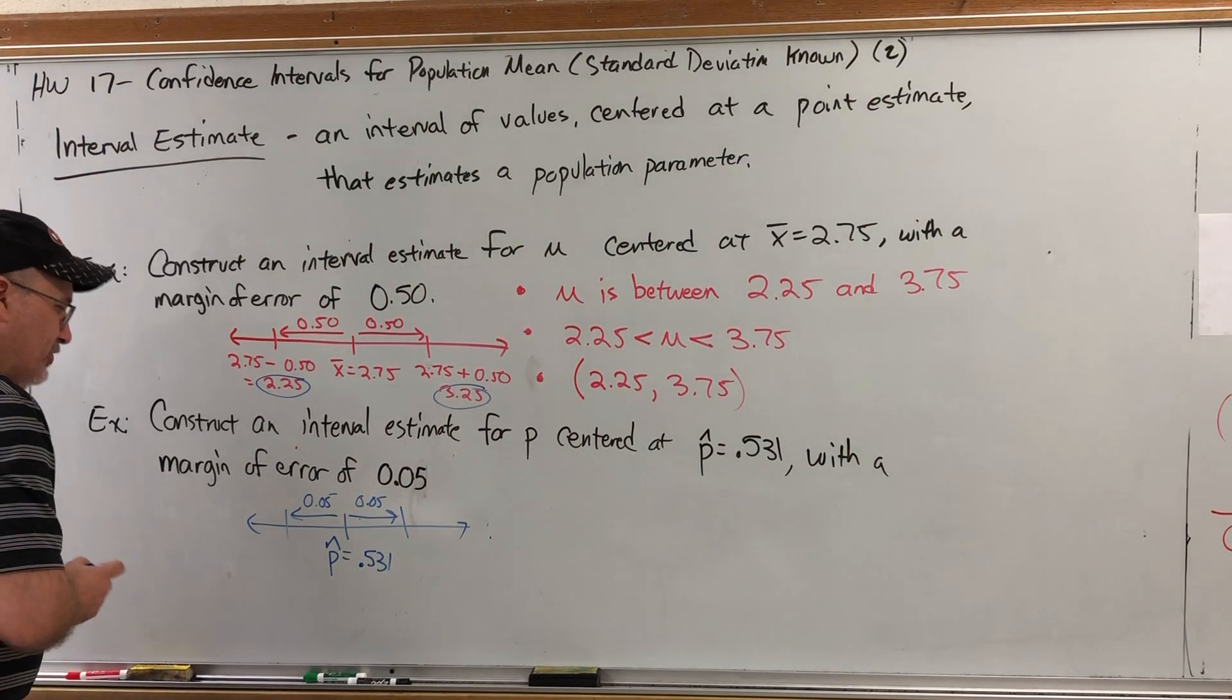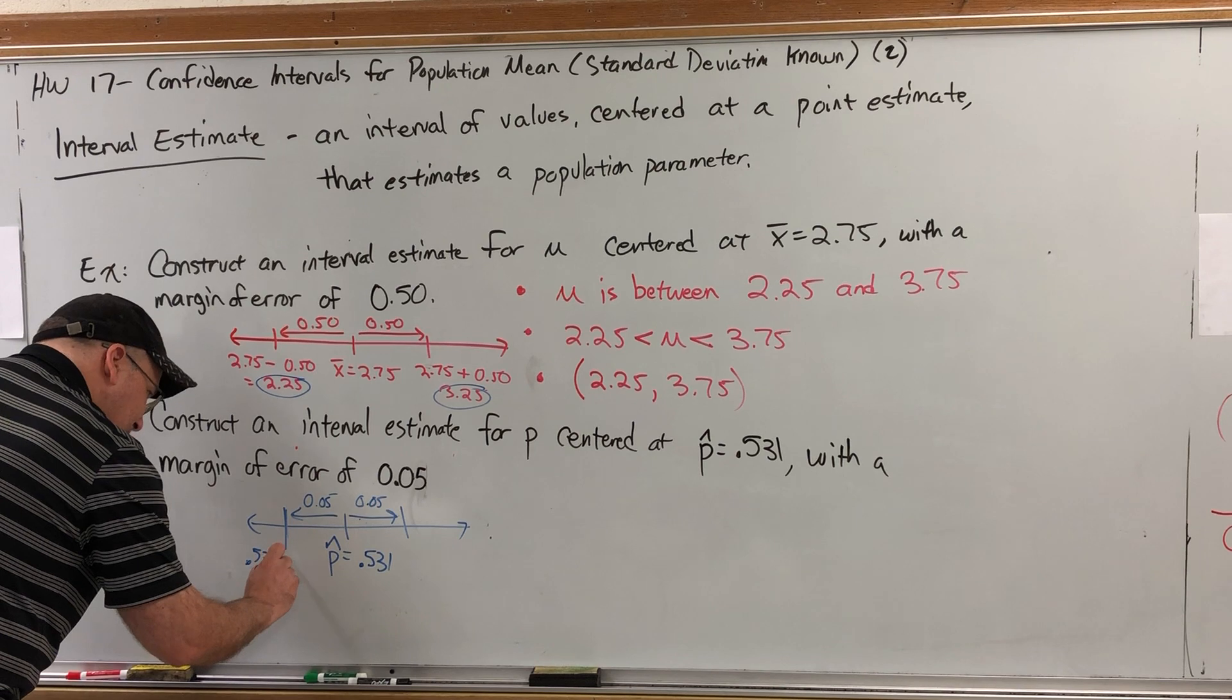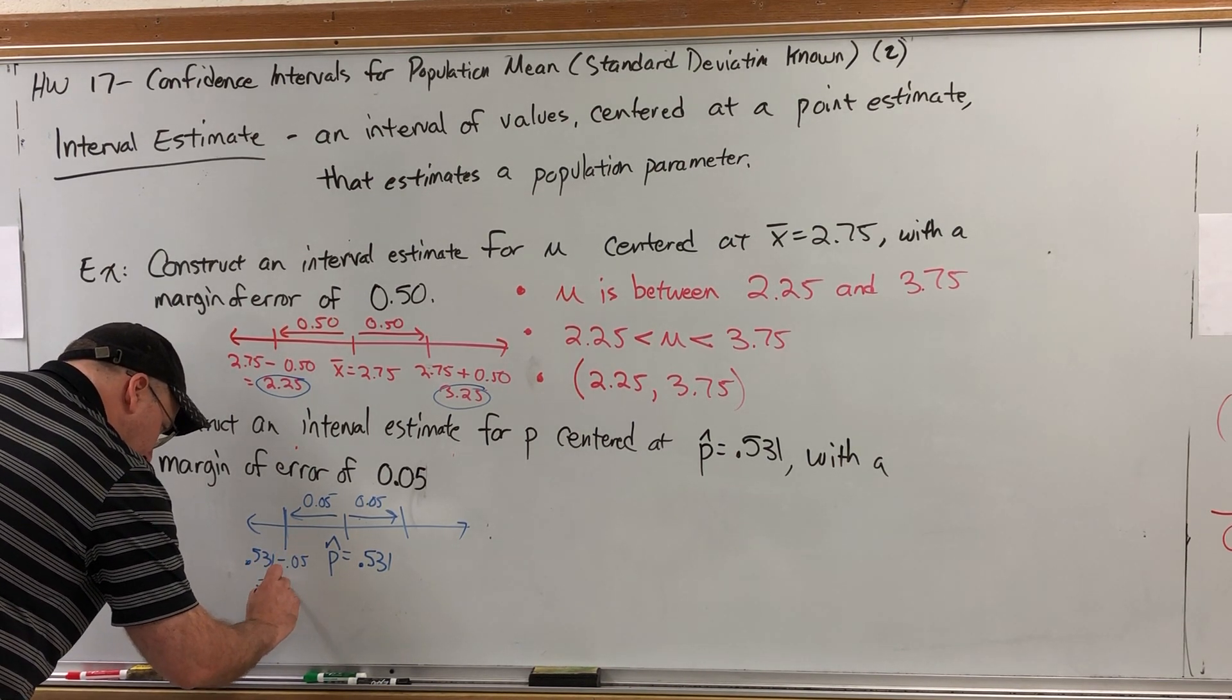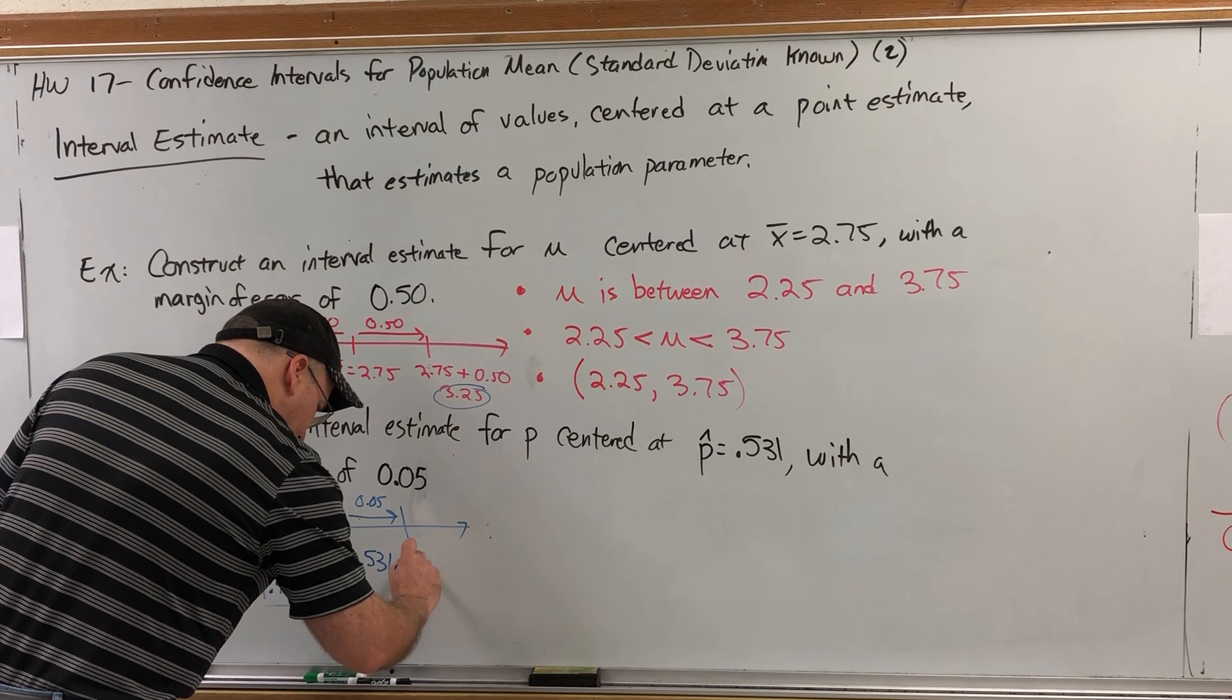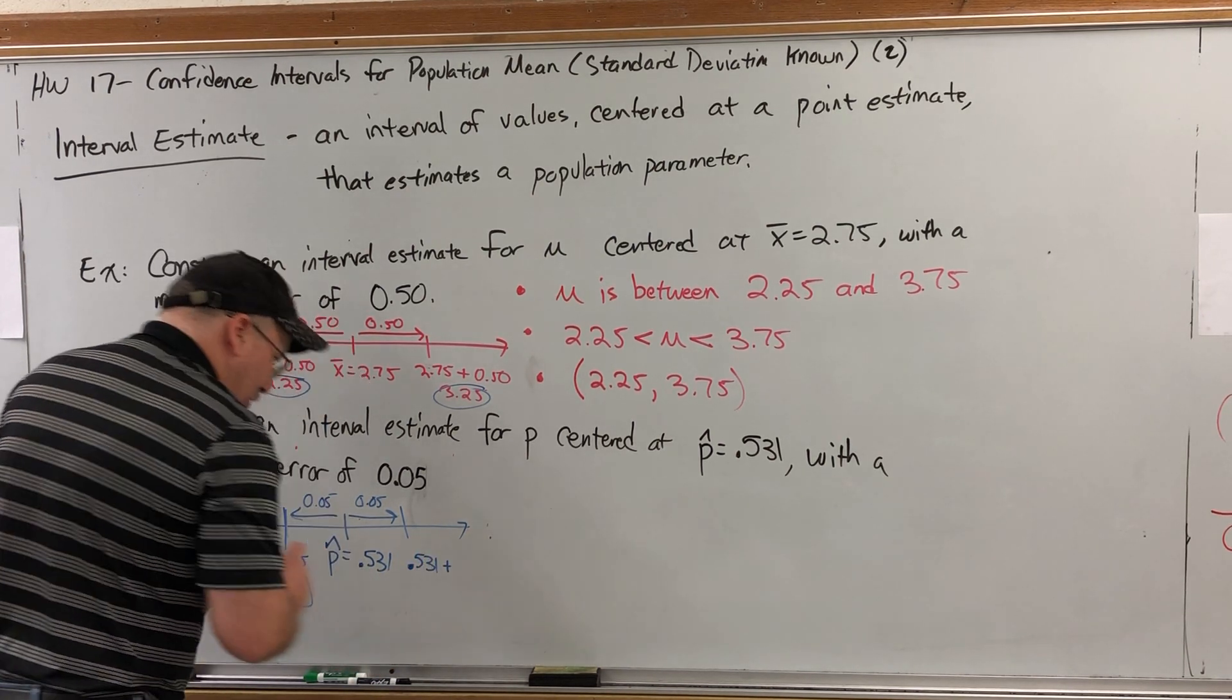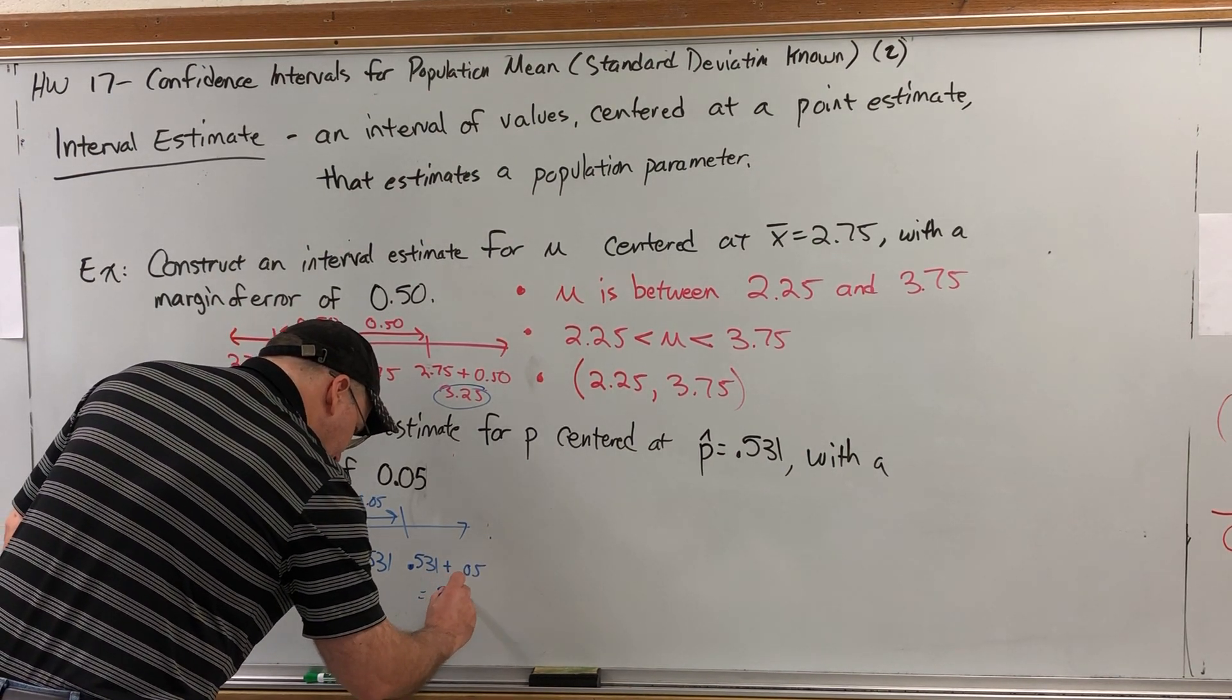When you go to the left, you subtract the margin of error, so the left end would be 0.531 minus 0.05, which is 0.481. And on the right end, we would take our center, our point estimate 0.531, and add the margin of error, so plus 0.05, which gives us 0.581.